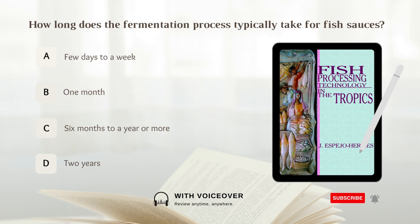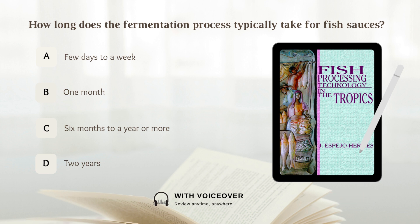How long does the fermentation process typically take for fish sauces? A. A few days to a week. B. One month. C. Six months to a year or more. D. Two years. Answer: C. Six months to a year or more.